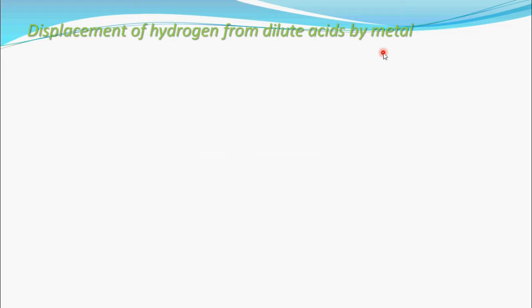In this video you will come to know which metals in the electrochemical series can displace hydrogen molecules from the acid solution. Before watching this video, make sure that you have watched the previous videos — parts 17, 18, and 19 of electrochemistry.